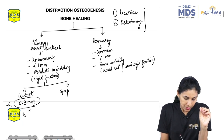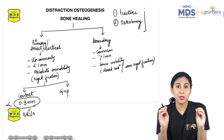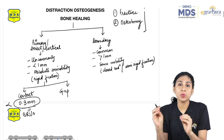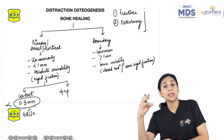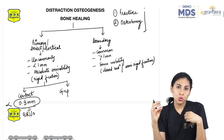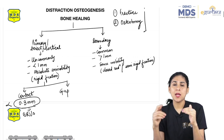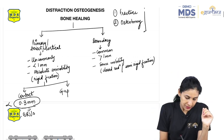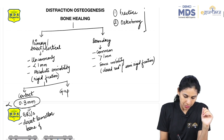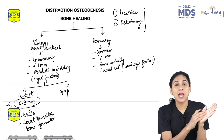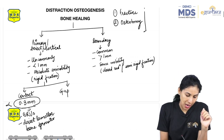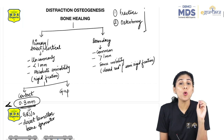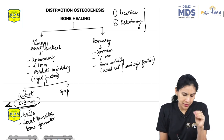In contact healing, bone resorption units or BMUs are formed. Osteoclasts will be at the front, forming a cutting cone by resorbing the bone. In the cut part, capillaries and osteoblasts come in and directly form lamellar bone — exactly like the previous bone in the same direction. This happens when the gap between segments is less than 0.3 mm, and is very rare.